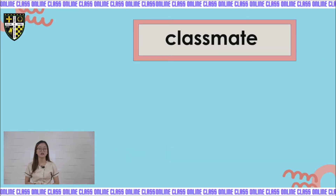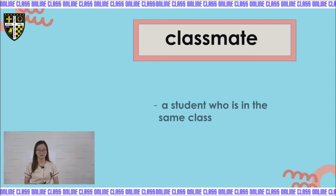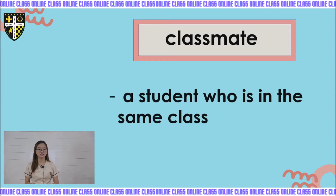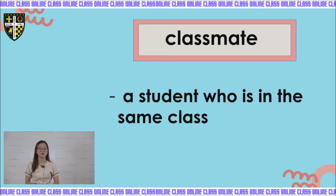The next one is classmates. Classmate, kids, is a student who is in the same class. So we are in Grade 1. And your classmates are 17, isn't it? So all of them are your classmates.